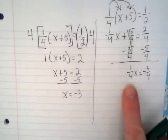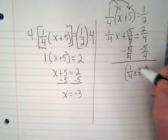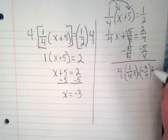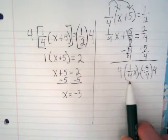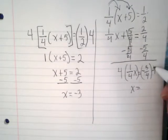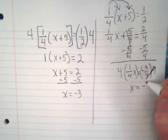And I still need to get rid of this 1 fourth over here because it's with the x. So I'm going to multiply by its reciprocal, which is 4. 4 times 1 is 4, divided by 4 is 1. It gives me x. And this and this are going to divide out, leaving us with just negative 3.